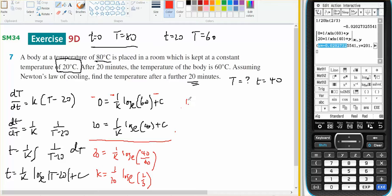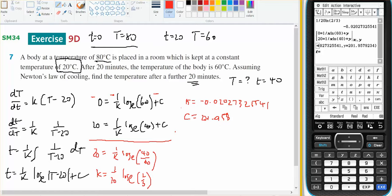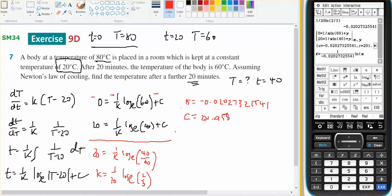So K equals negative 0.027325541, and C equals 201.957. Now just to double check that, I have my expression which is T equals 1 divided by K, log base E of X minus 20 plus C.